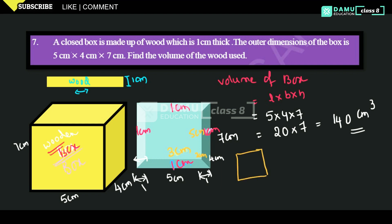So the inner dimensions of the wooden box are: 5 minus 2, 4 minus 2, 7 minus 2. Length will be 3 centimeters, breadth will be 2 centimeters, and height will be 5 centimeters.